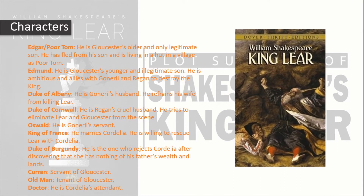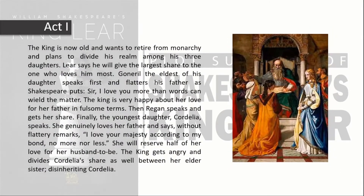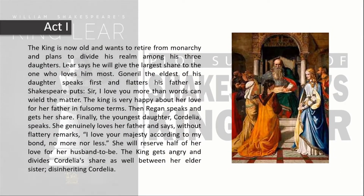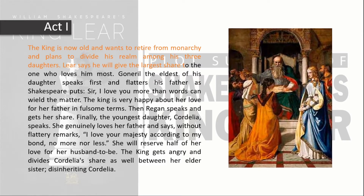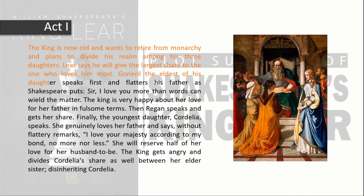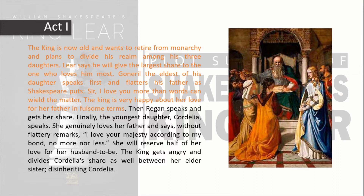Let's jump into the plot summary now. Act 1: The king is now old and wants to retire from monarchy, and plans to divide his realm among his three daughters. Lear says he will give the largest share to the one who loves him most. Goneril, the eldest daughter, speaks first and flatters her father, as Shakespeare puts: 'Sir, I love you more than words can wield the matter.' The king is very happy about her love expressed in such fulsome terms.